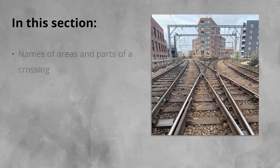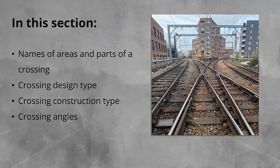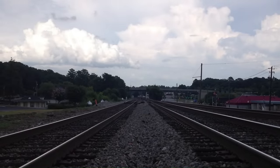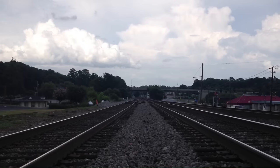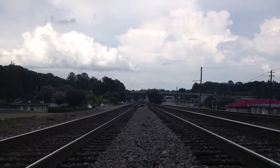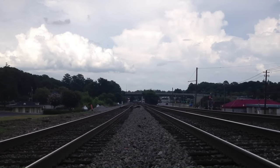In this section we will look at names of areas and parts of a crossing, the two design types of crossings, the different crossing construction types, and crossing angles. Before we dive deep into crossings, let's look at some of the parts of crossings and their names. This will help with explanations in later sections. Where names are specific to certain crossing construction types or obtuse crossings, we will cover them when we talk specifically about those types.